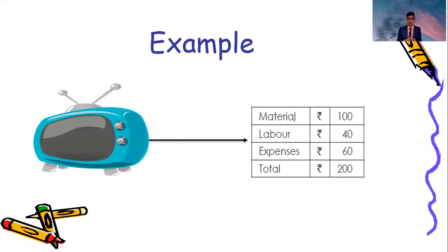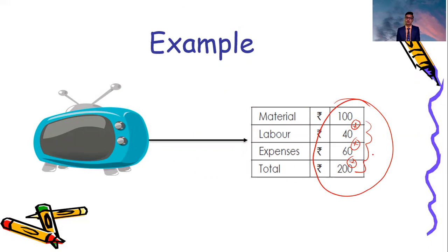Another example: I asked you about the cost of a TV. What did you do? You added three expenses — material, labour, and other expenses. So the aggregate that we have done, we call this process costing. I hope you now understand the meaning of costing. Thanks.